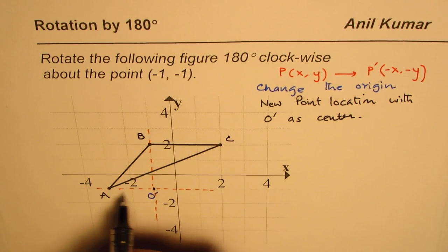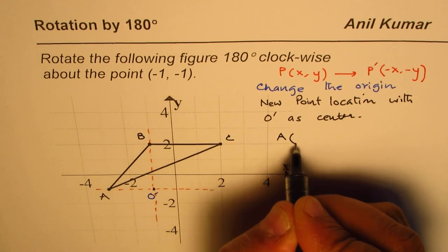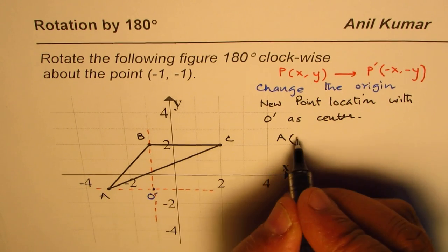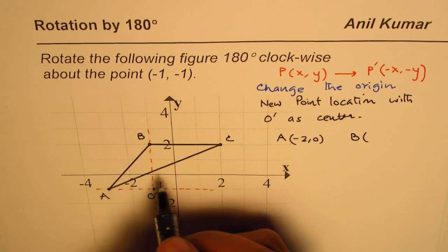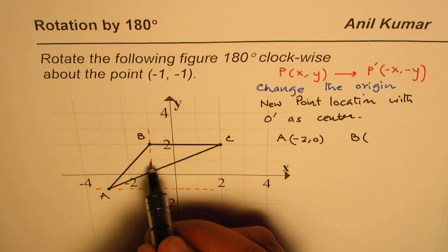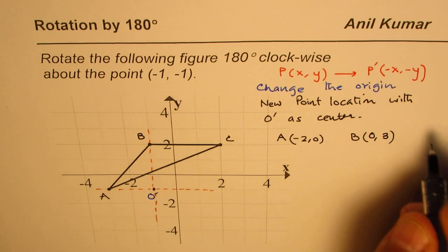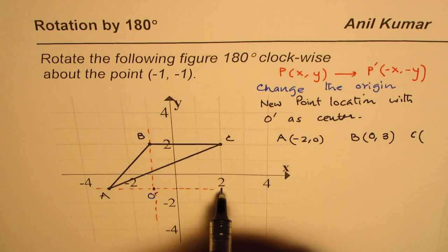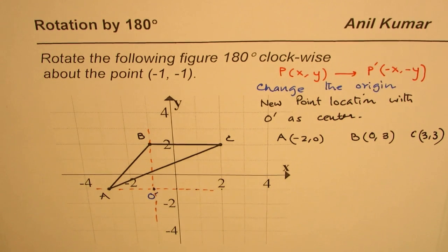Let's say these points are A, B, and C. What is the location of A from O'? Point A is two units to the right, so it's (2, 0). Point B is three units up, so it's (0, 3). Point C is three units right and three units up, so it's (3, 3). These